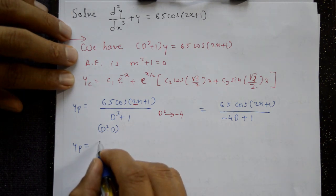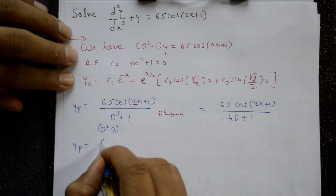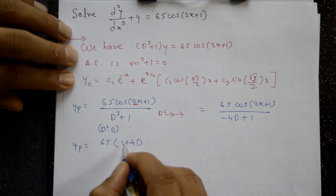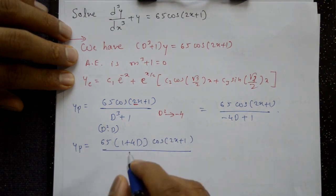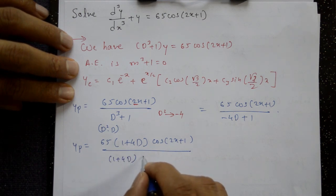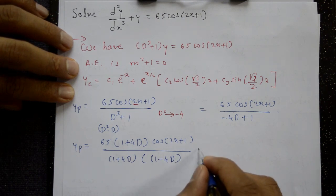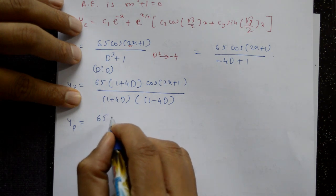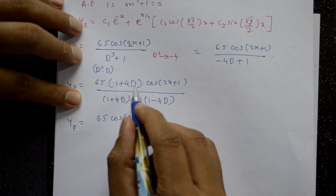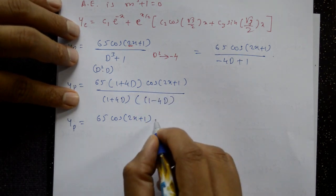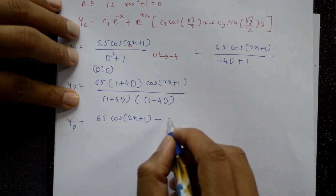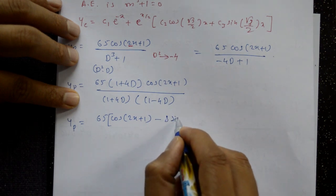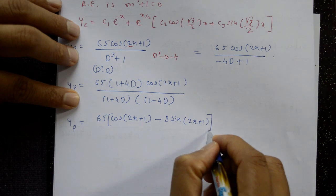Multiply and divide by (1 + 4D): yp = 65cos(2x+1)·(1 + 4D) / [(1 - 4D)(1 + 4D)] / (denominator). Now (1 + 4D)cos(2x+1): differentiating cos(2x+1) gives -2sin(2x+1), so 4D·cos(2x+1) = 4·(-2sin(2x+1)) = -8sin(2x+1). Thus numerator = 65[cos(2x+1) - 8sin(2x+1)].